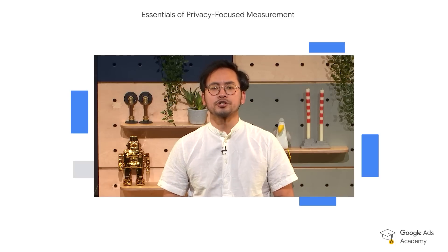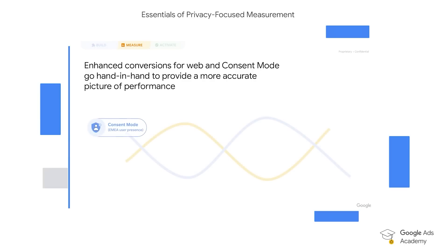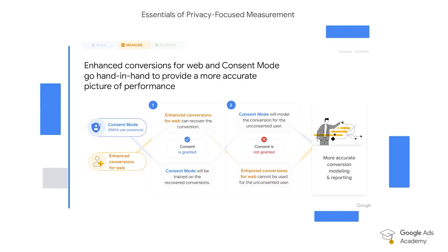How do Enhanced Conversion and Consent Mode work together? When a user grants consent, Enhanced Conversion for Web will be able to recover those conversions and help increase the size of the observable data pool. Consent Mode, meanwhile, will work behind the scenes to train its models based on this observable data. But when the user doesn't provide consent, measurement of conversions will have to be done at an aggregate level, which could mean losing insight over the customer journey. Consent Mode can help solve for this by modeling conversions based on the observable data it has trained on.